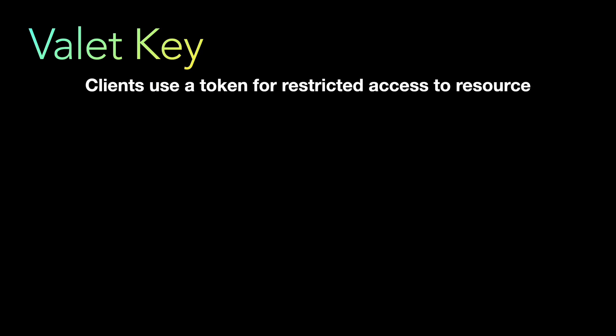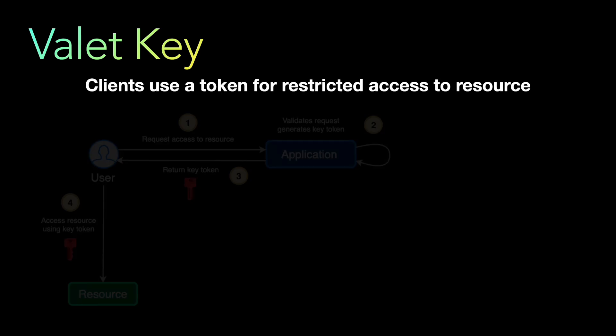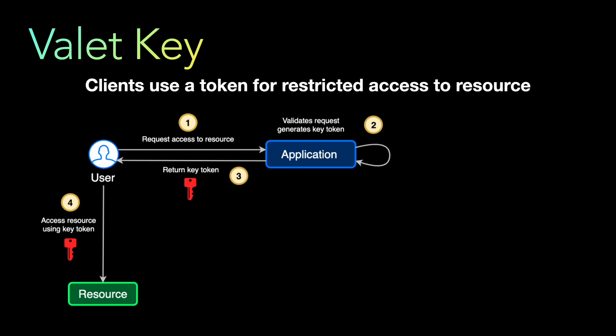The third pattern is the Valet Key Pattern, one of the most key security patterns. The valet key pattern provides clients with a token for restricted, direct access to resources — such as a queue or a notification topic — without your service coming in between. This is especially relevant for cloud applications where you want to provide direct resource access.